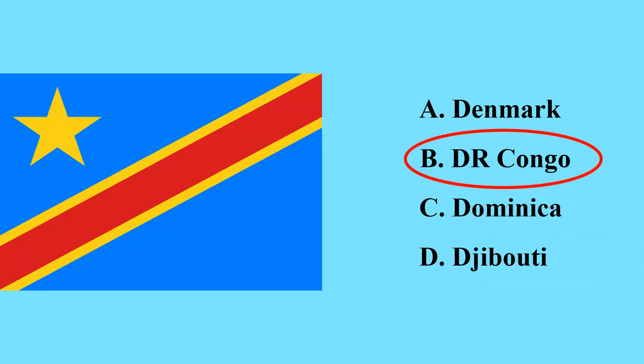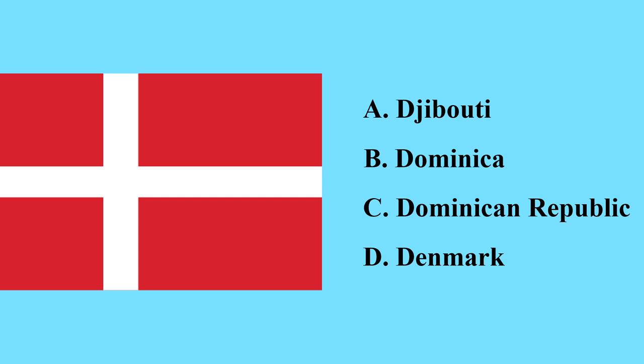This is the flag of the Democratic Republic of Congo — the second largest country in Africa. The DRC is famous for diamond production and is home to the origin of the Congo River, which flows through the largest country in the equatorial region of Africa.